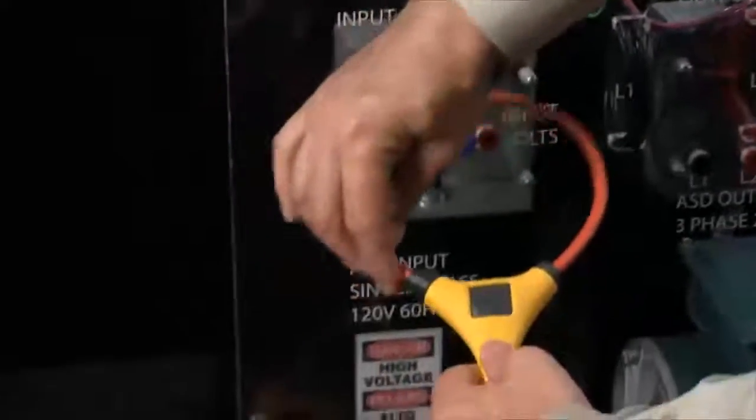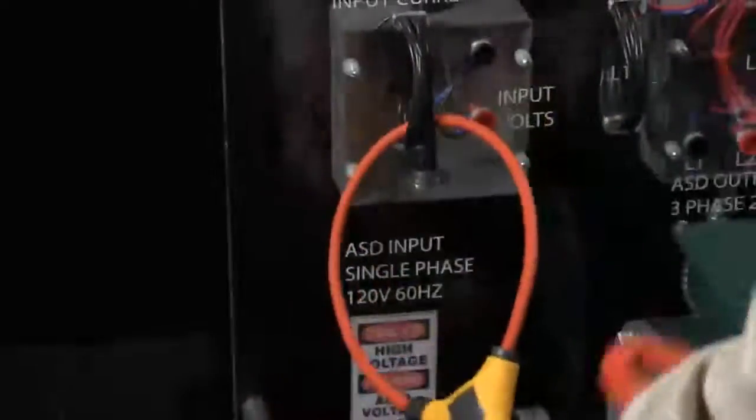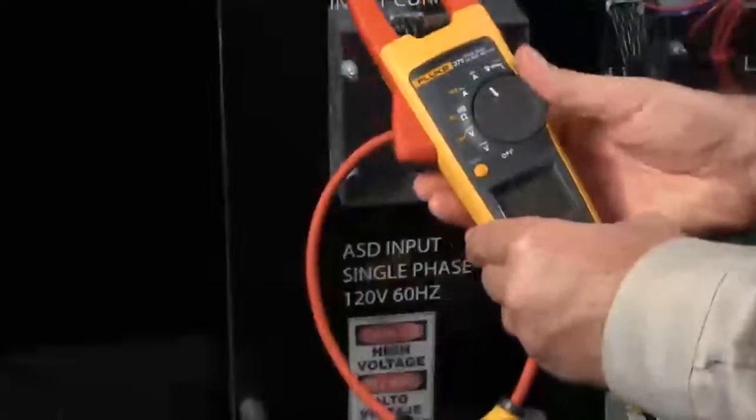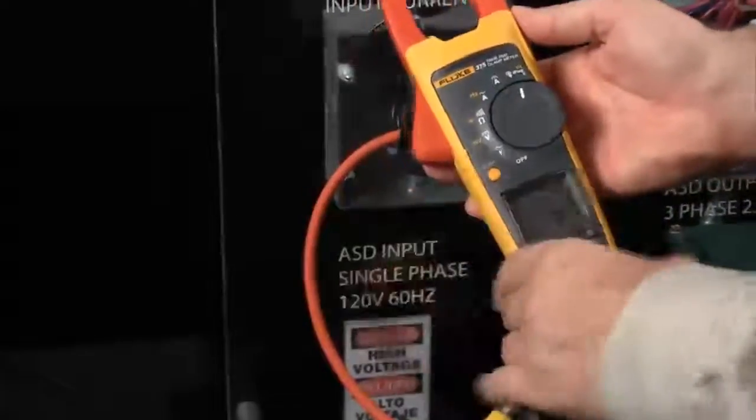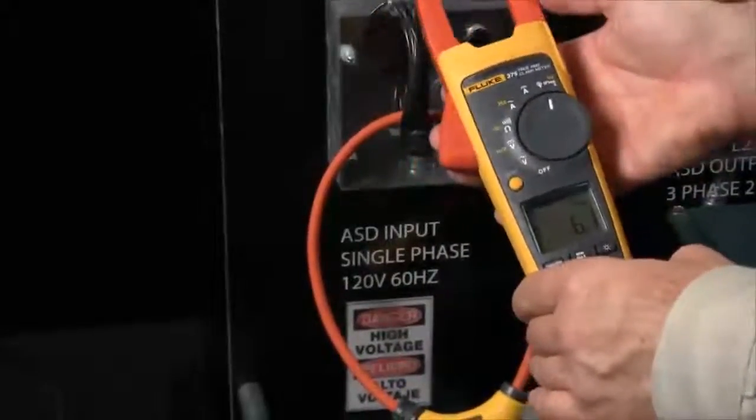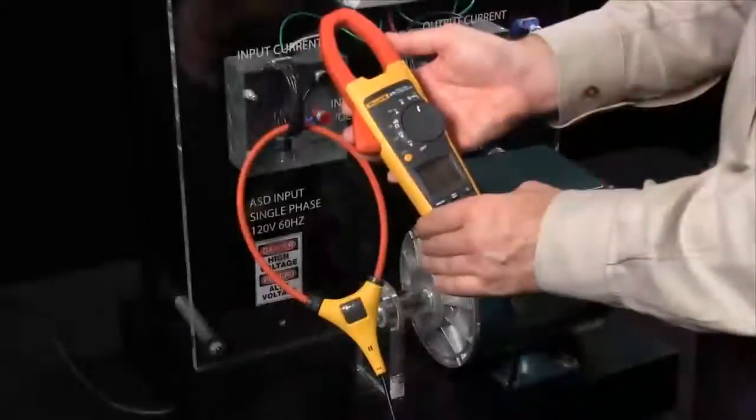Simply loop the iFlex around your conductors and now you change the deflection on your dial to read through your iFlex and you're reading your current through the iFlex as opposed to the molded case.